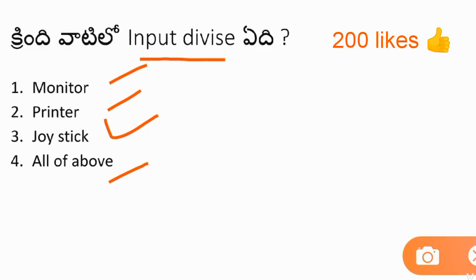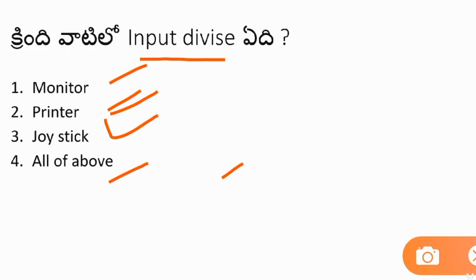Input devices include: mouse, keyboard, mic, light pen, joystick, OCR, and scanner. OCR is used to scan exam papers. When you scan a hardcopy, it produces a softcopy — that is what a scanner does. A printer is an output device, and the remaining devices are input devices. Input and output devices are very important.